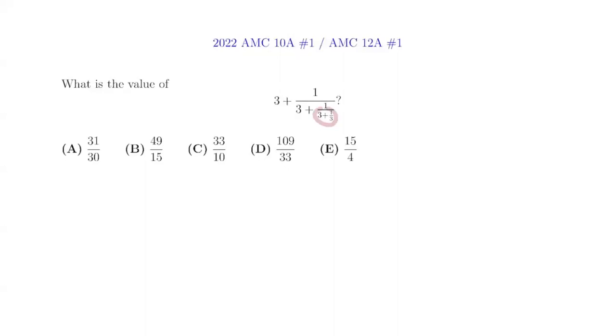We notice that this can be rewritten as a fraction, 3 times 3 plus 1, which is 10, over 3. So our overall expression will take on the value of 3 plus 1 over 3 plus 1 over 10 thirds.